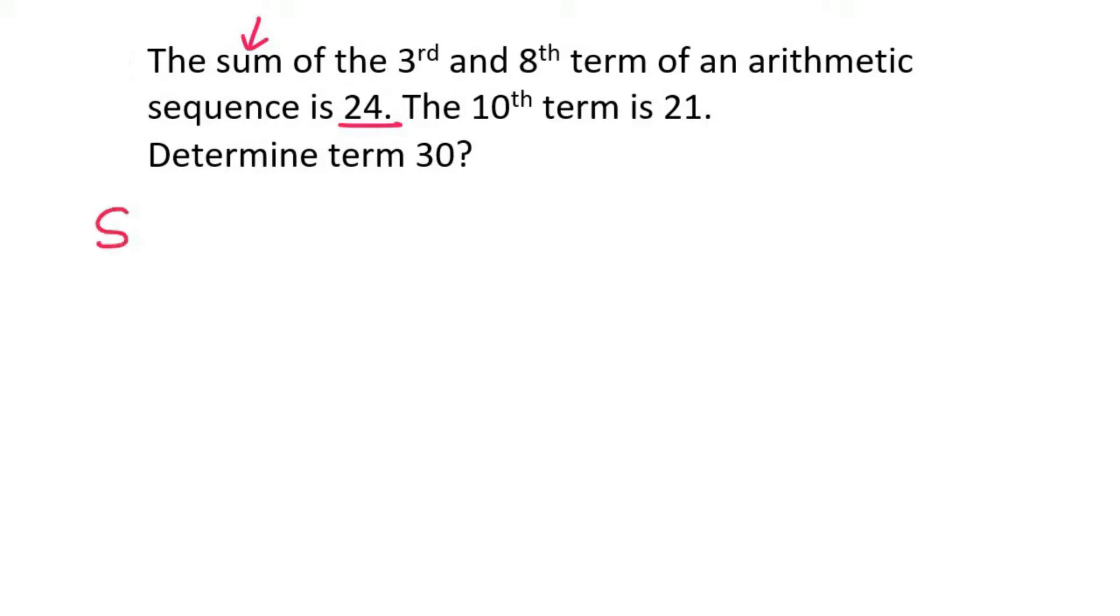If you had to use the sum formula for three terms, what that actually means is term 1 plus term 2 plus term 3. They didn't say that the sum of all the first three terms, they're saying the sum of only the third term and only the eighth term.